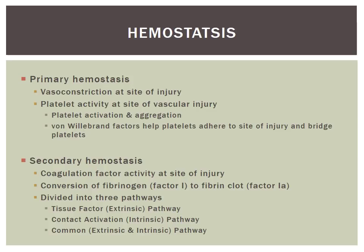Secondary hemostasis is the portion that involves factors of coagulation. The end of this path involves fibrinogen, also known as factor 1, forming a fibrin clot — listed as factor 1a. When a factor is in its active form it will be listed with an 'a' suffix, so factor 2 active becomes factor 2a, and so on. This is a common convention you will see when talking about hemostasis.